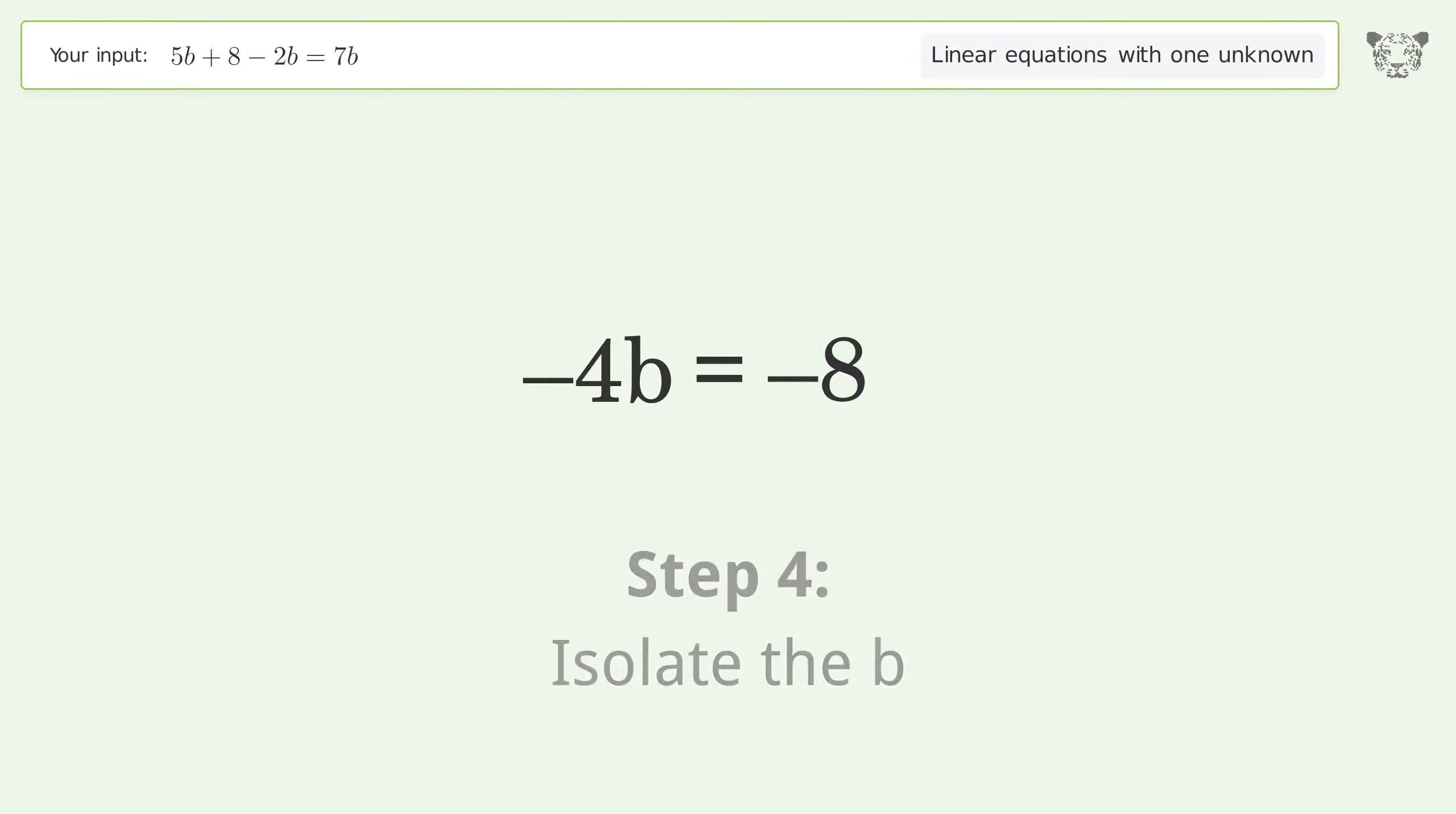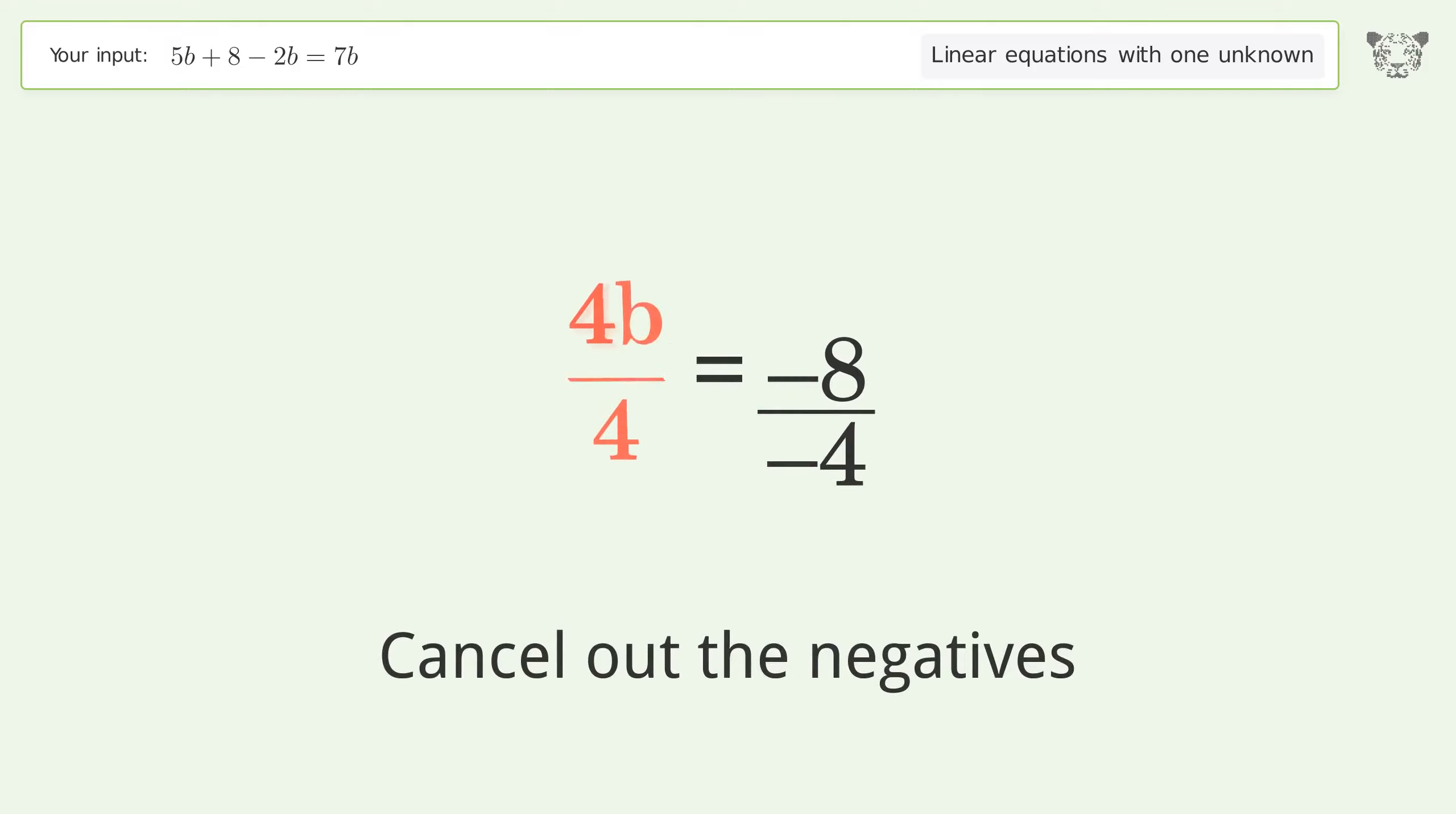Isolate the b. Divide both sides by negative 4. Cancel out the negatives. Simplify the fraction.